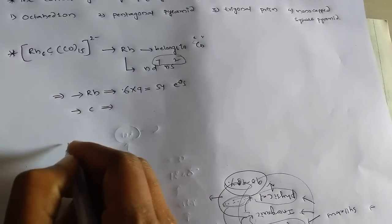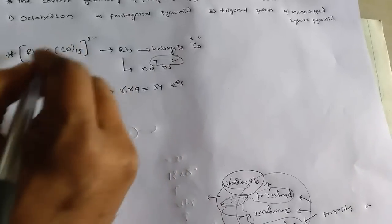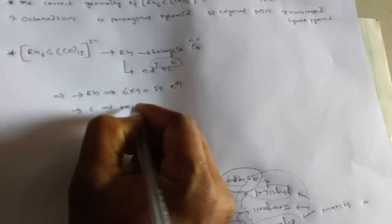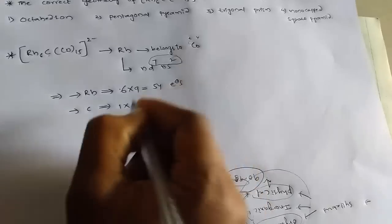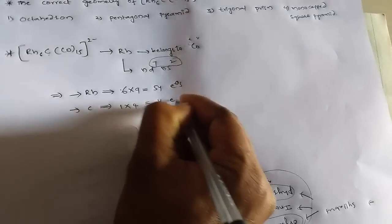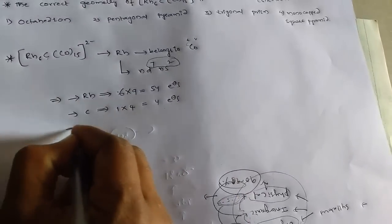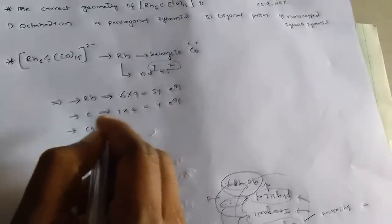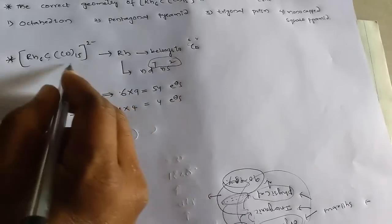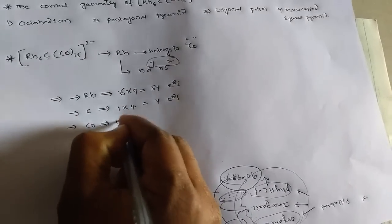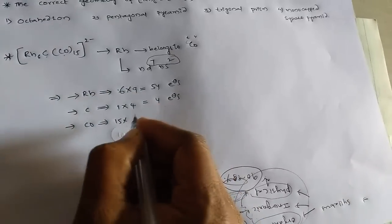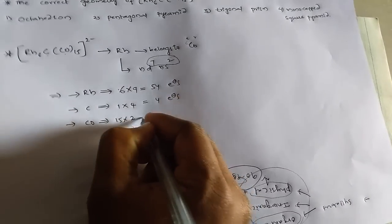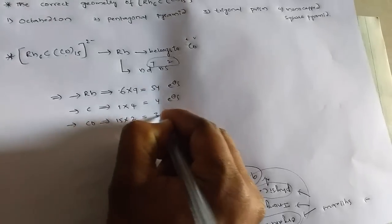Then carbon. We know that in this complex one carbon is there, one into, and carbon valence is four, hence four electrons. And we have ligands, CO ligands. Here we have 15 CO ligands, and each CO can contribute two electrons to the complex.